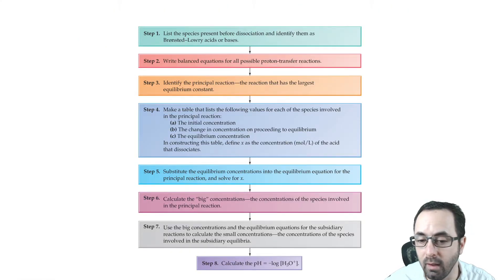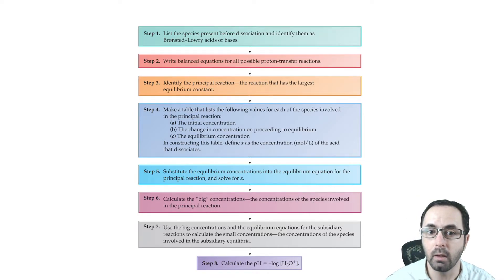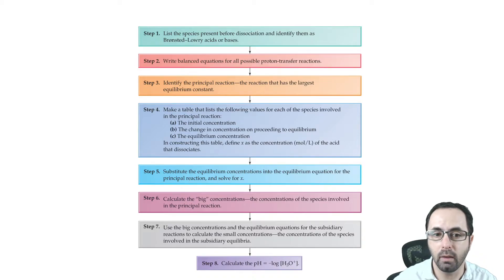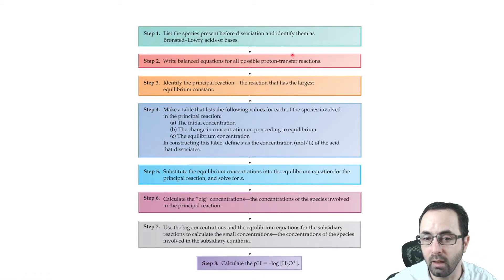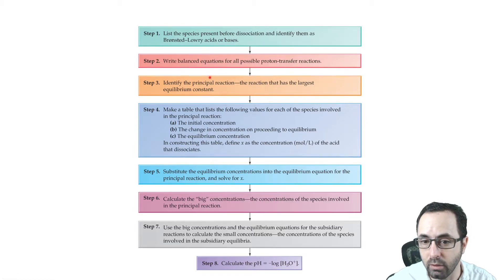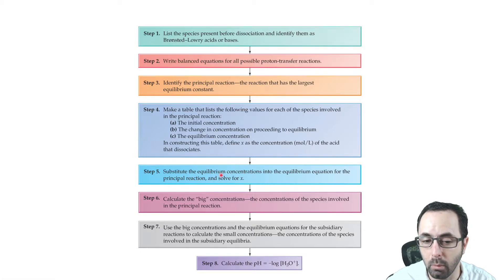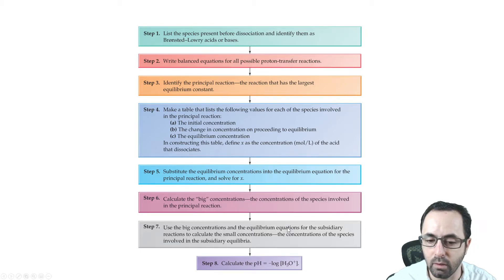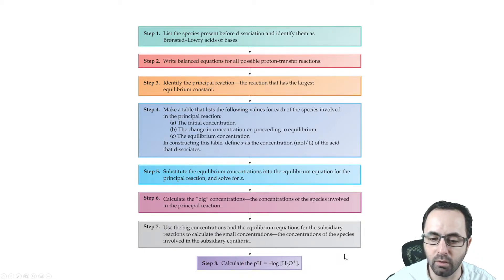Here's a list of steps from the book. The most important step is writing the equation for the proton transfer — identify the reaction, then make your ICE table. Substitute the equilibrium concentrations stated in terms of X, solve for X, calculate the concentrations, and then take the negative log of the hydronium concentration to get the pH.